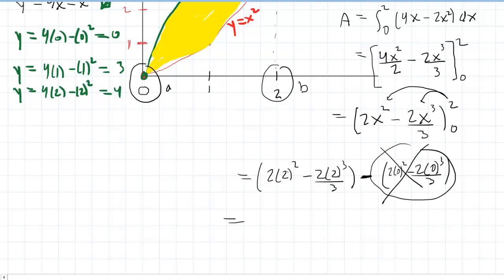So we'll square the 2 to make 4, then multiply by 2 to make 8. We'll cube the 2 to make 8 times 2 is 16, but then that's over 3.